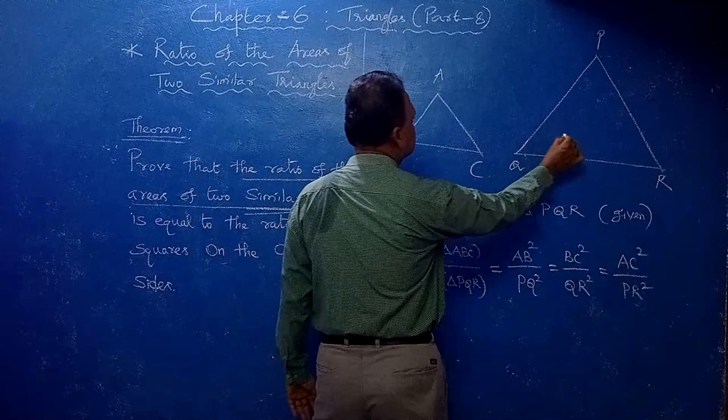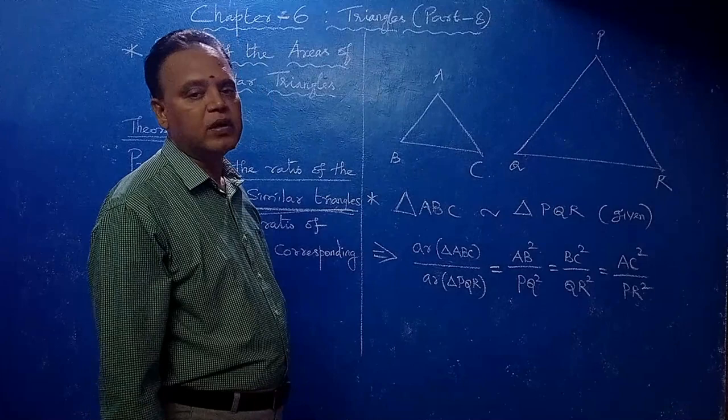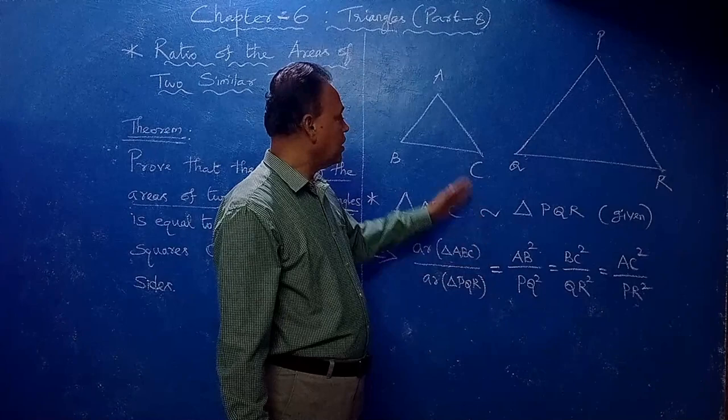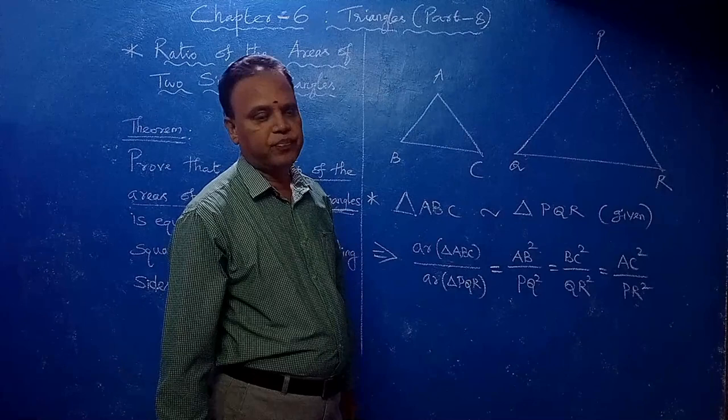How to remember this result? Any two triangles that are similar — if area is involved in the problem, you have to use this result. Two triangles similar means immediately you write: area of this triangle by area of this triangle equals the ratio of the squares of the corresponding sides. AB squared by PQ squared equals BC squared by QR squared equals AC squared by PR squared.